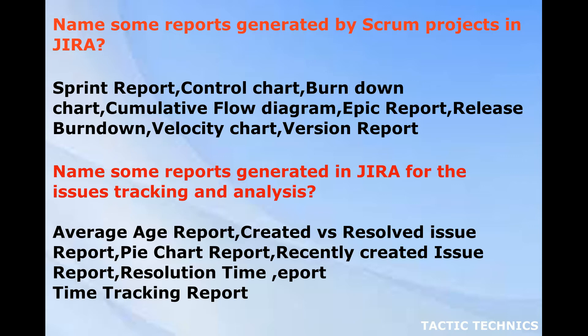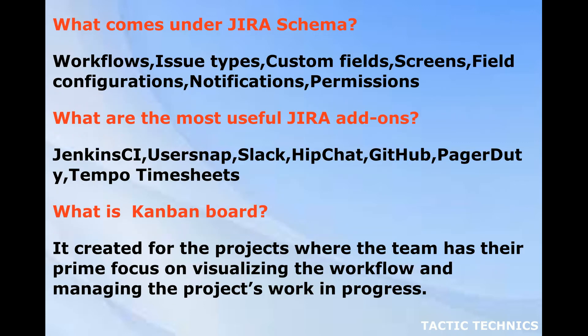Name some reports generated in Jira for issue tracking and analysis: average age report, created versus resolved issue report, pie chart report, recently created issue report, resolution time report, and time tracking report. What comes under Jira schema? Workflows, issue types, custom fields, screens, field configurations, notifications, and permissions.